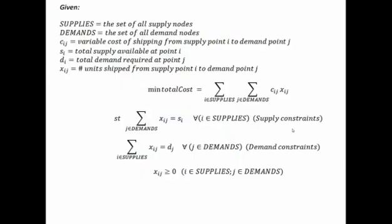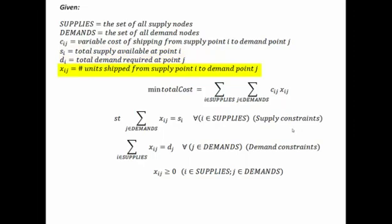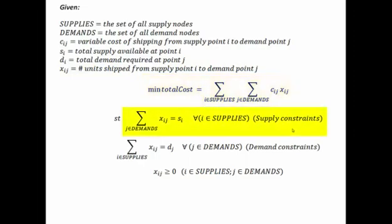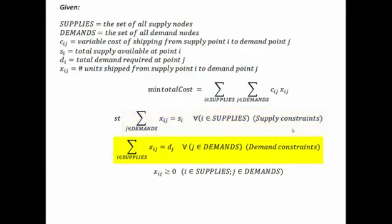We can formulate that as follows: we have a set of supply nodes, a set of demand nodes, a cost to ship from each supply point to each demand point, the total supply available at each supply node, and the total demand required by each demand node. Our decision variable becomes X_IJ — the number of units shipped from supply point I to demand point J. In a transportation problem, we're interested in minimizing total cost. We have supply constraints ensuring we don't send more than available, and demand constraints ensuring we send enough supply to each city.